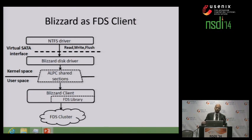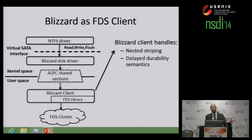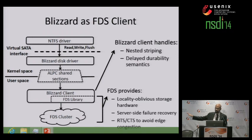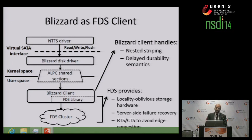In terms of implementation, we built Blizzard as an FDS client. There's a kernel-mode SATA driver that receives IOs from the applications. That SATA driver uses shared memory to deliver those requests to a user-mode FDS program. The Blizzard client handles the nested striping and the delayed durability semantics. FDS provides the locality-oblivious storage hardware and mechanisms to recover from failed server disks. By running Blizzard as an FDS client, POSIX and Win32 applications can run in the cloud on the same hardware used to run traditional big data applications.